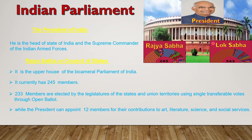Indian Parliament is also known as bicameral legislature. Bicameral legislature means two houses are there in the legislative body. On the basis of houses, there are two types of legislative body: unicameral and bicameral. Unicameral means only one house is there in the legislative body. Bicameral means two houses are there. In Indian Parliament, Rajya Sabha and Lok Sabha are the two houses. That's why Indian Parliament, or the Union Legislature of India, is also known as bicameral legislature.